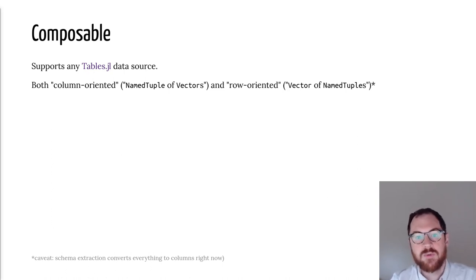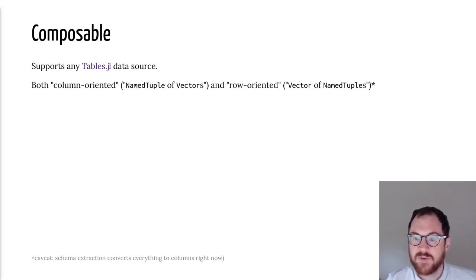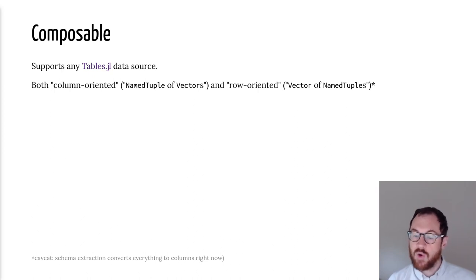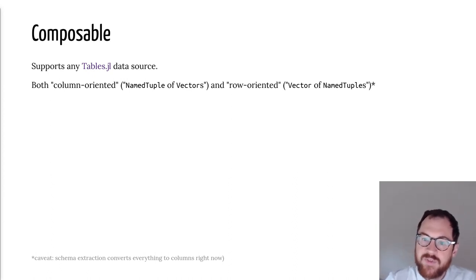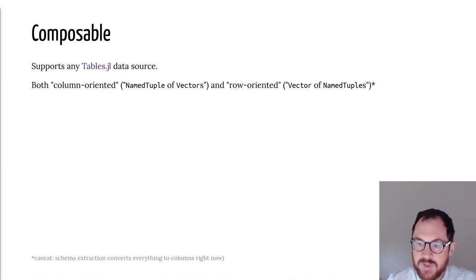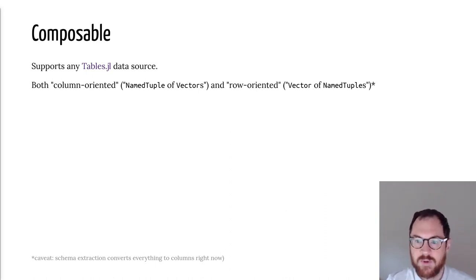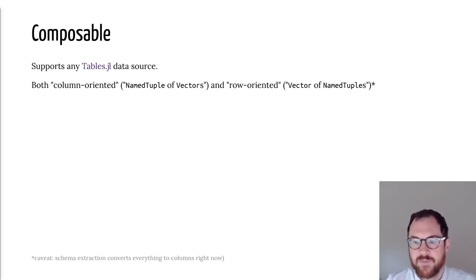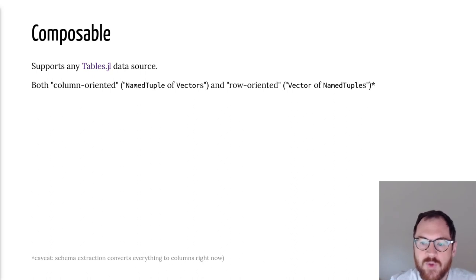The current system is composable in the sense that it takes any Tables.jl data source and returns arrays — both column-oriented (a named tuple of vectors) and row-oriented (a vector of named tuples, iterating single rows). There's a caveat: support for row-oriented tables isn't complete because schema extraction currently converts everything internally into column format. That's not an intrinsic limitation — it's just something we haven't implemented yet, and we'd welcome help with that.